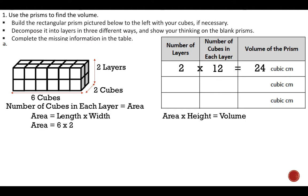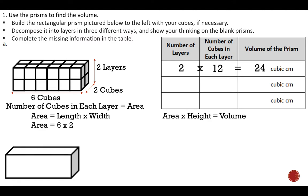Now we're going to take the same shape of this prism and break it up in different ways to still find that volume of 24 cubic centimeters. We can cut the shape into different ways and figure out how many cubes we'll have in each layer. For this first model, I'm going to cut it right down the center, so I still have two layers, but I won't draw all those individual cube lines.